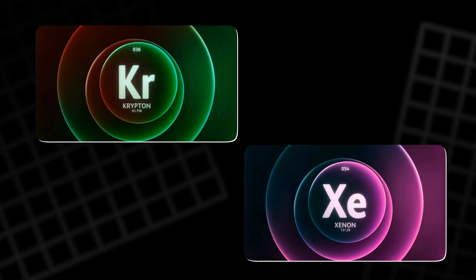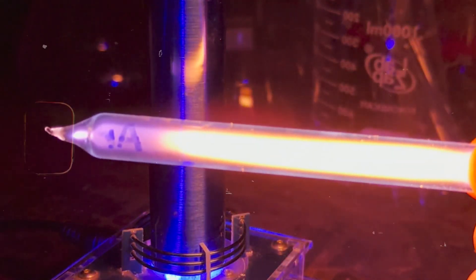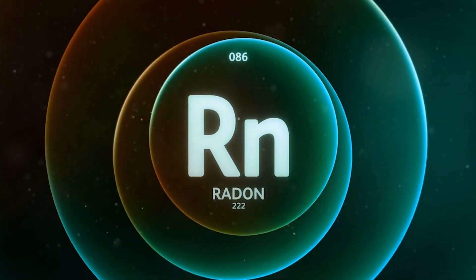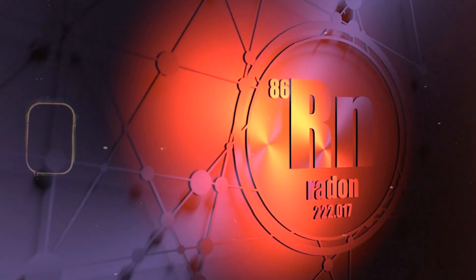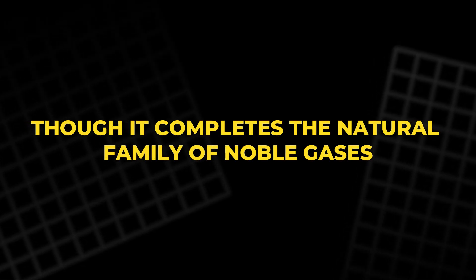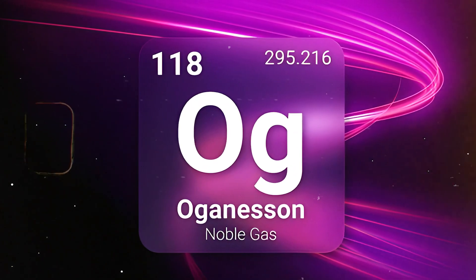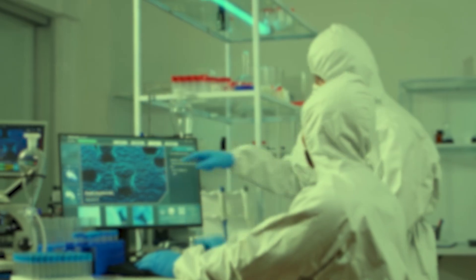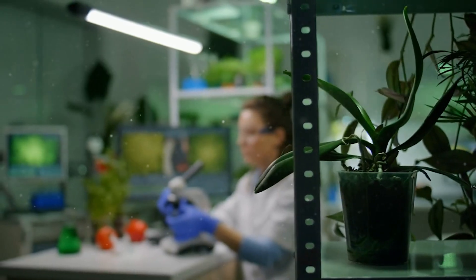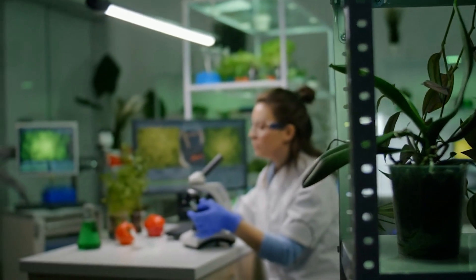Krypton and xenon, though rare, have found their roles in specialized lighting, lasers, and photography. Radon, on the other hand, is radioactive and not suitable for lighting, though it completes the natural family of noble gases. Oganesson, the heaviest and newest addition, exists only in laboratories for fractions of a second and remains largely theoretical in terms of observable properties.